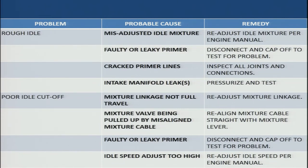If the primer is faulty or leaking, it should be disconnected and capped off, and the problem rectified accordingly. If leaking, the leaks need to be fixed; if the system is faulty, proper replacements should be done as specified in the engine manual. If idle speed adjustment is too high, we need to readjust the idle speed as per the engine manual.